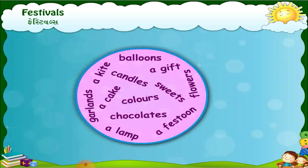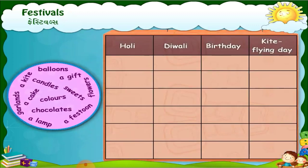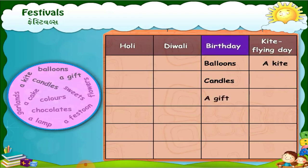Now, look at this balloon. It contains the names of things related to different festivals and celebrations. Let us read these things and classify them in the table as per their festivals. Balloons are used in birthday celebrations. Candles are used in birthday celebrations. A kite is used in kite flying day. A gift belongs to a birthday party. Chocolates are used in birthday celebrations. A cake is also used in birthday celebrations.